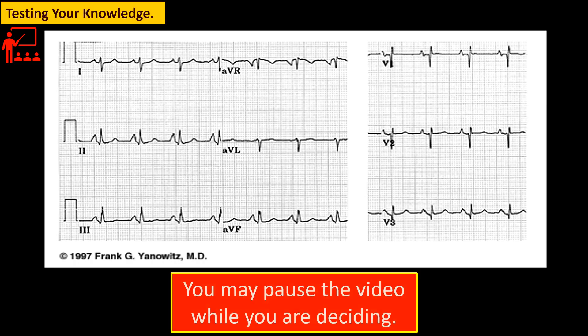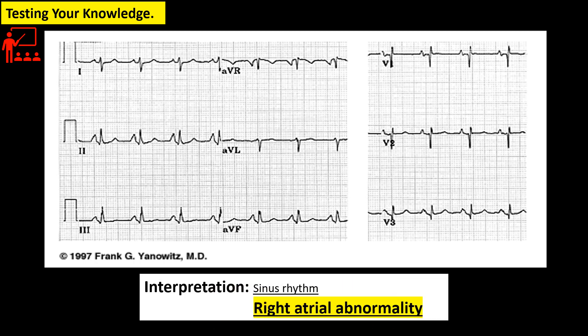Let us apply what you just learned. For example, in this ECG tracing, what is your reading? If your answer is right atrial enlargement or abnormality, then you are right. The amplitude of the P wave in lead V2 is more than 2.5 mm, and in lead V1 is more than 1.5 mm.